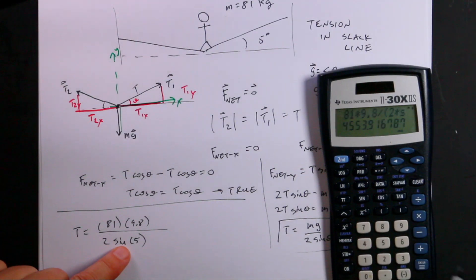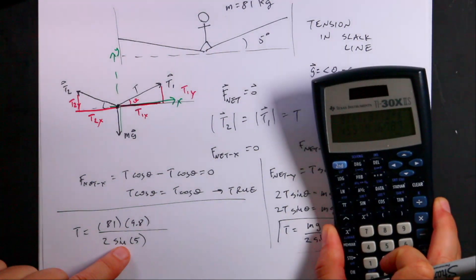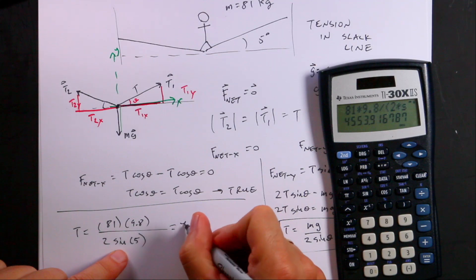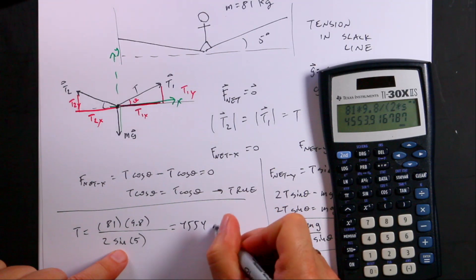Close parentheses. Enter. And I get 4, 5, 5, 4. Let's see. 4, 5, 5, 4 Newtons.